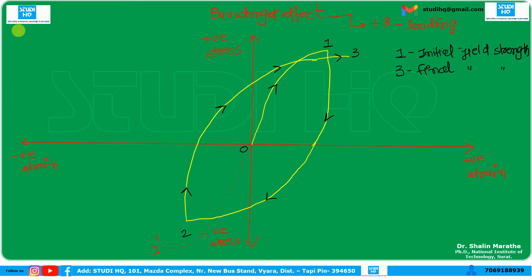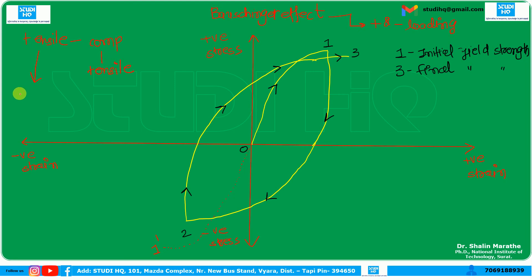So what is the key thing to understand? When any object is loaded with tensile load, then compressive, and then again tensile load, in such cases, when the first tensile load is applied, the initial yield strength of the material will be greater than the yield strength of the material when the second — or final — tensile load is applied. This particular effect — the reduction in yield strength — is known as the Bauschinger effect.